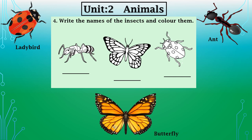In question four, you have to write the names of the insects and color them. The first picture is of an ant, the second is of a butterfly, and the third is of a ladybird. I have pasted pictures of a ladybird and butterfly for your convenience. Write the names on the blanks and take the coloring idea from the pasted pictures.